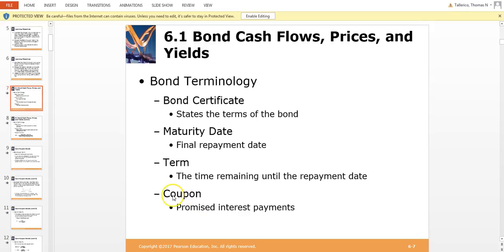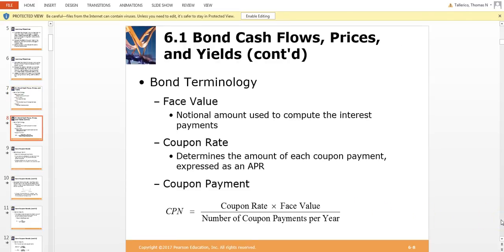Face value is otherwise known as par value, and typically it'll be a thousand dollars all the time. That's what's used to compute the interest payments that you would receive on this bond.